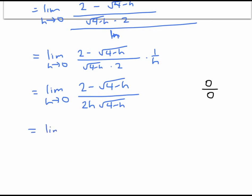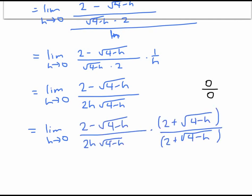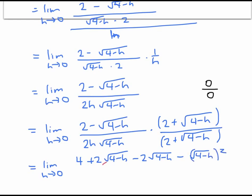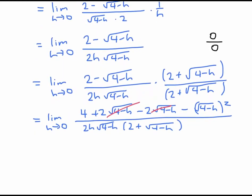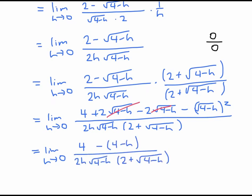Let's try multiplying the top and the bottom by the conjugate of the top. Once I multiply out, I'll get four plus two square root of four minus h minus two square root of four minus h minus the square root of four minus h squared — that's going to cancel out nicely. On the bottom, I'll have two h times the square root of four minus h times two plus the square root of four minus h, left factored for now.